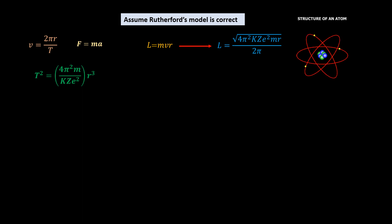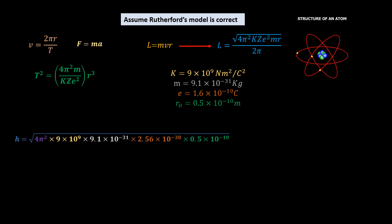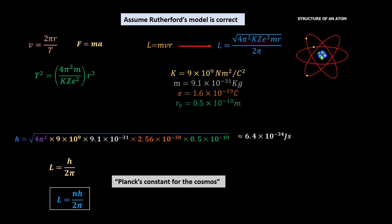For hydrogen, z is equal to 1 and r is the Bohr radius. Subbing in the values under the square root, we have 6.4 exponential minus 34 joules second, which is the value of the Planck's constant. So we can write momentum equal to h over 2 pi. For electrons in other shells, this equals nh over 2 pi. You can see the detailed derivation in this video.